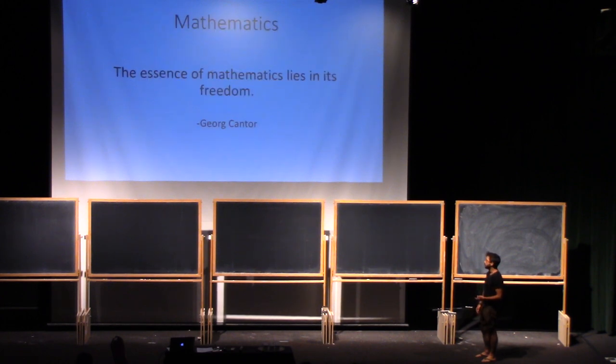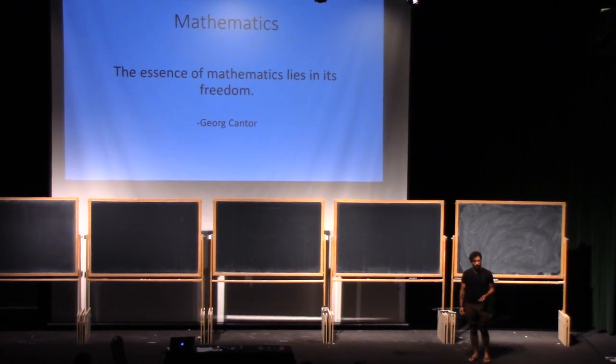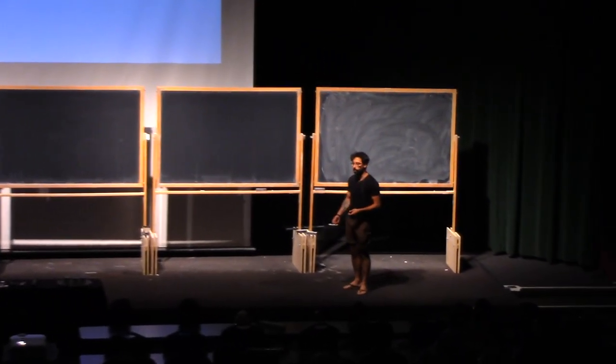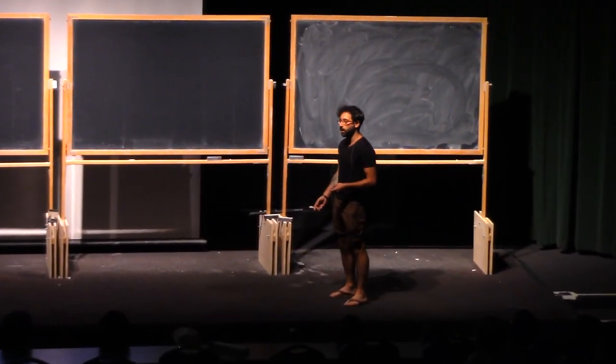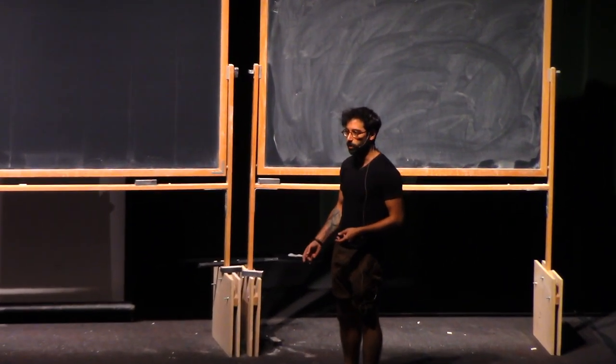So, to math. We turn here to George Cantor, and he says, the essence of mathematics lies in its freedom. I think what this is getting at is that math can be a language to describe other things, but it can also be a language in and of itself that possesses beauty and significance.